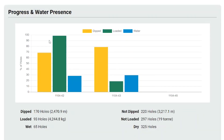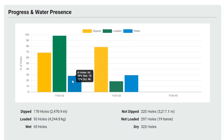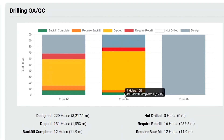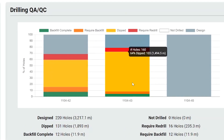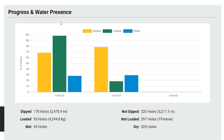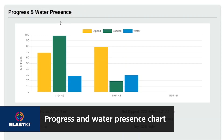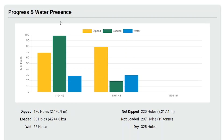New charts provide valuable real-time information to make your day-to-day work planning easier and faster. The progress and water presence chart displays the percentage of holes dipped and loaded, as well as the percentage of wet holes encountered, amounts to be dipped, and the product to be loaded for the blast.